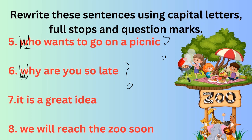Seventh: 'It is a great idea.' I is the first letter of this sentence, so it should be in capitals. It is a simple complete sentence, so full stop. Eighth: 'We will reach the zoo soon.' W is the first letter of this sentence, so W should be in capitals. 'We will reach the zoo soon.' Full stop.